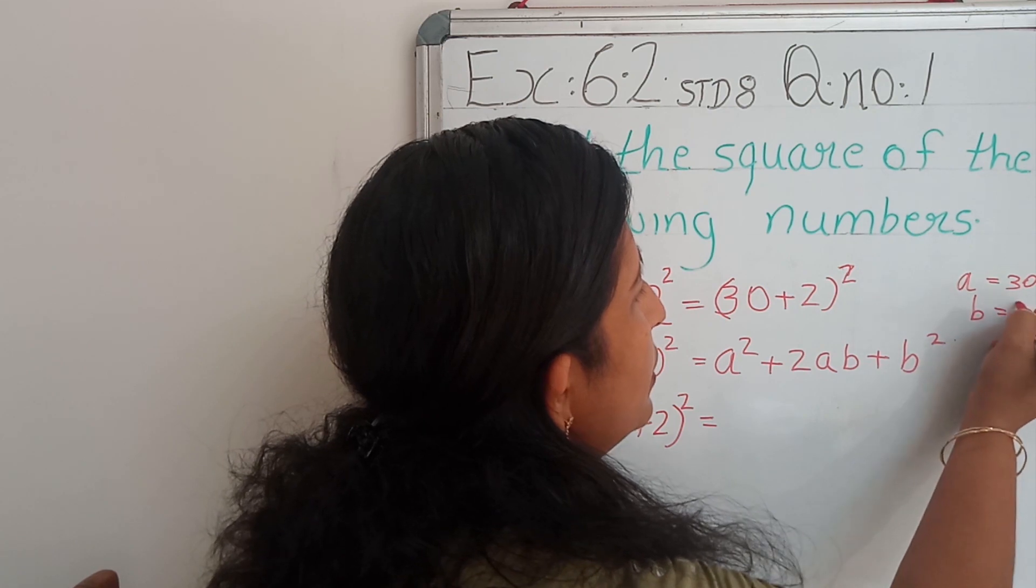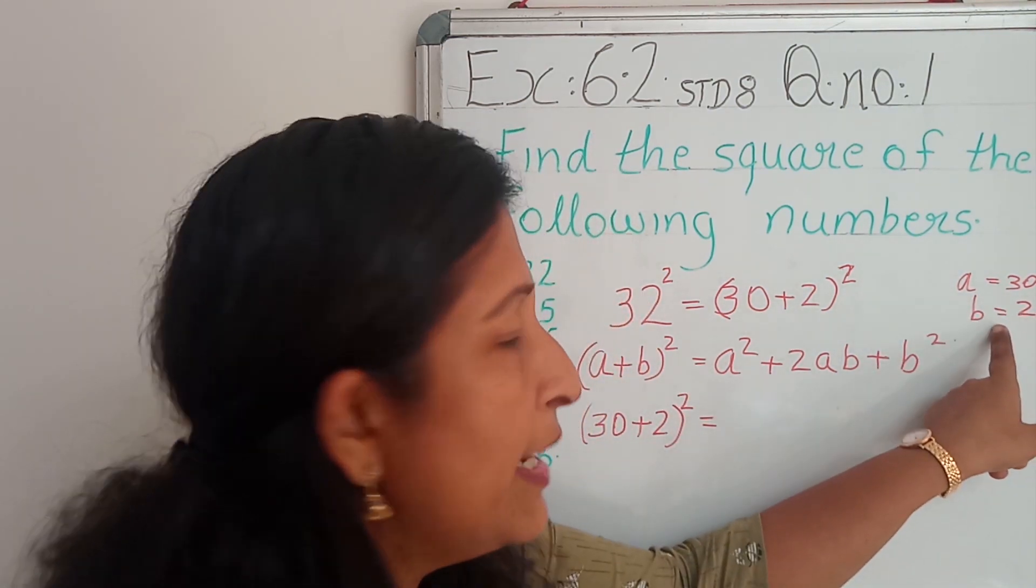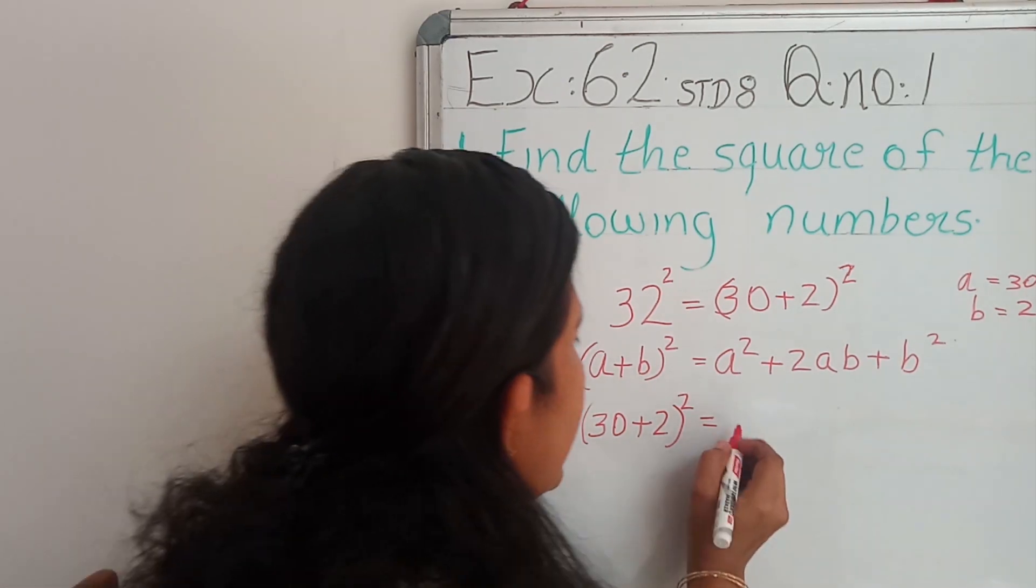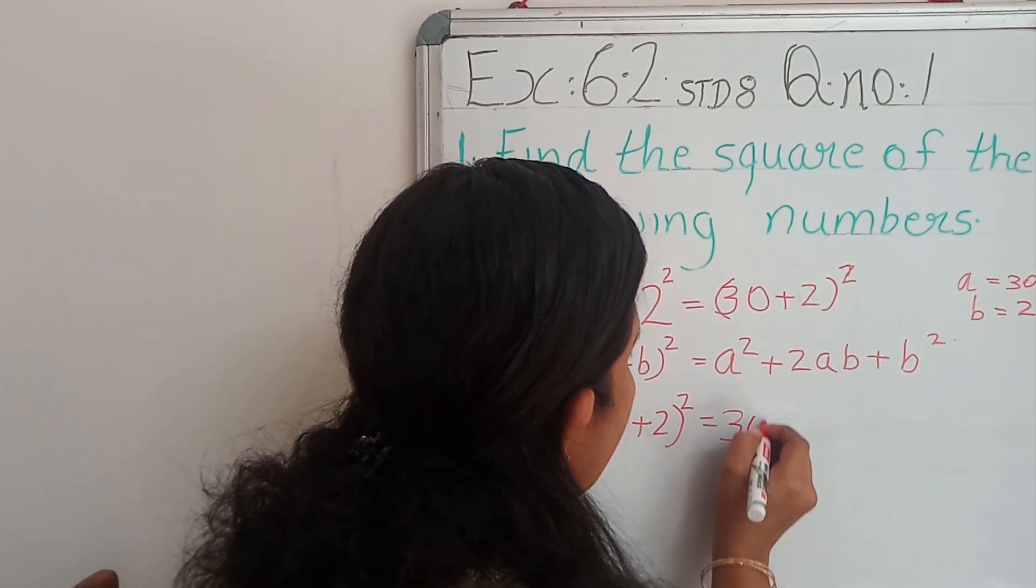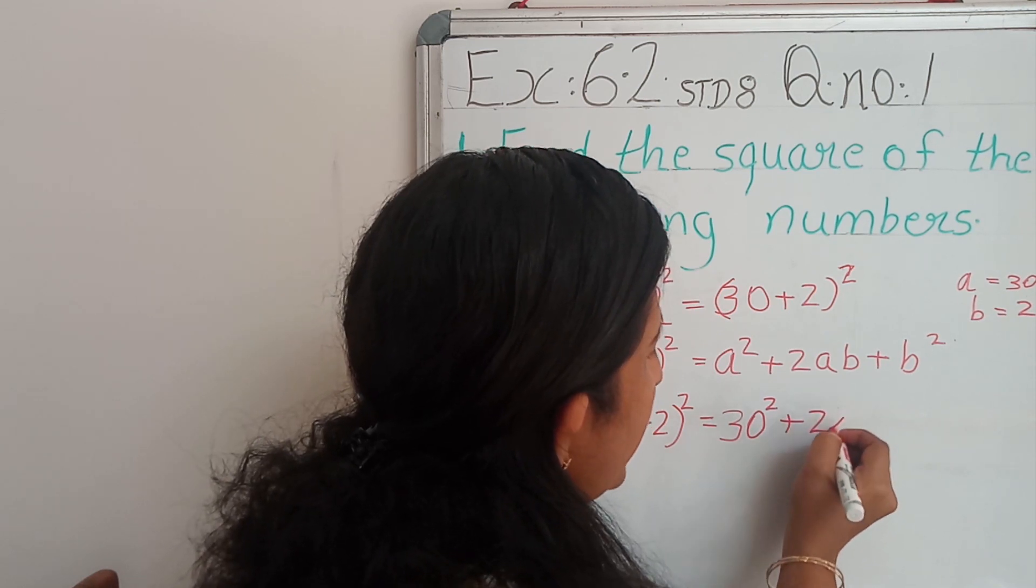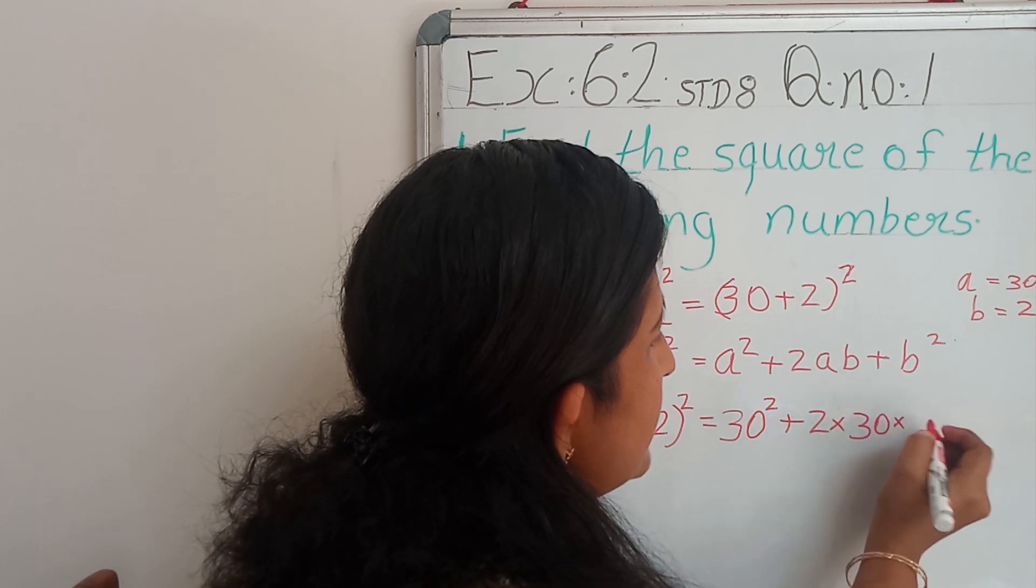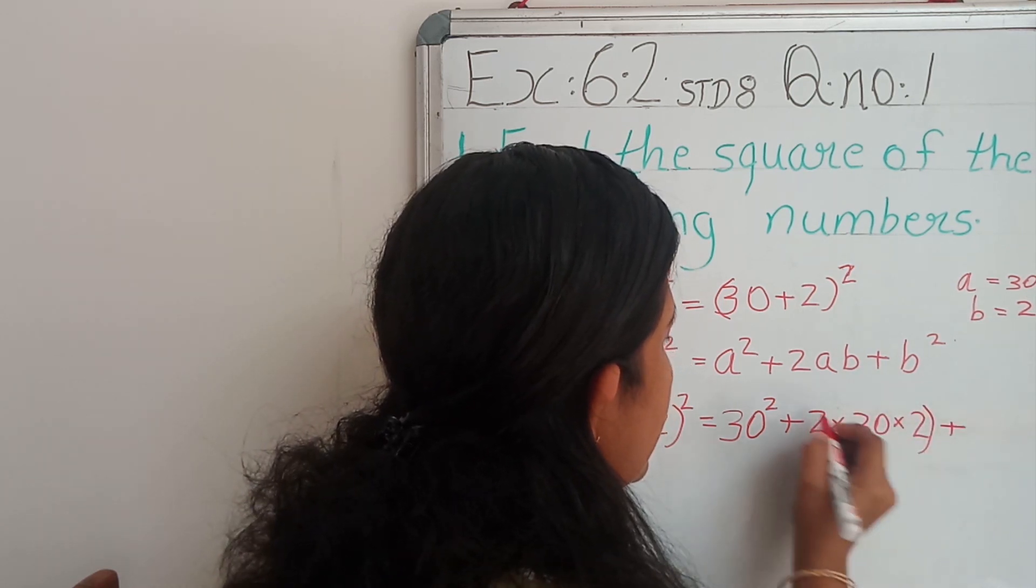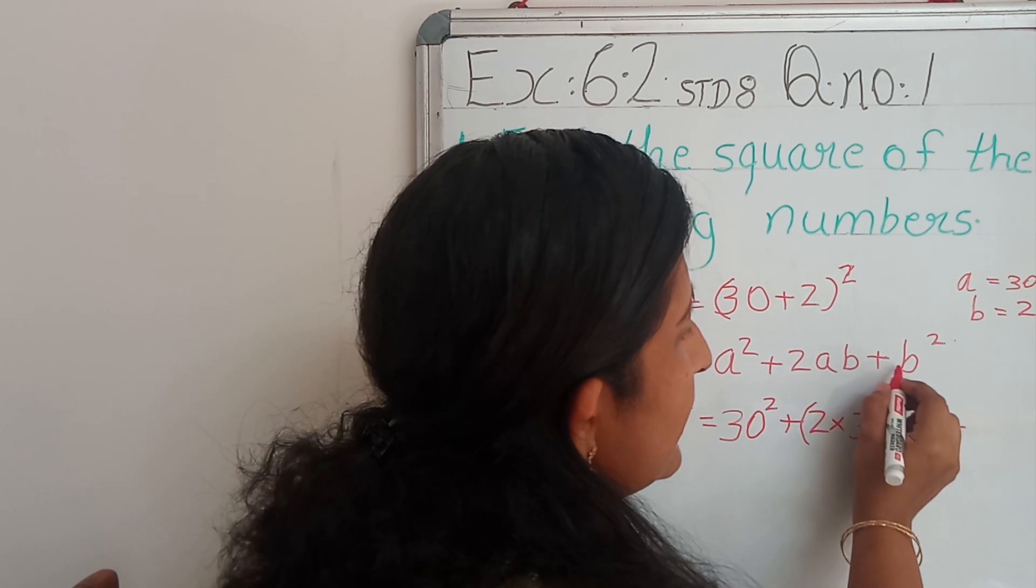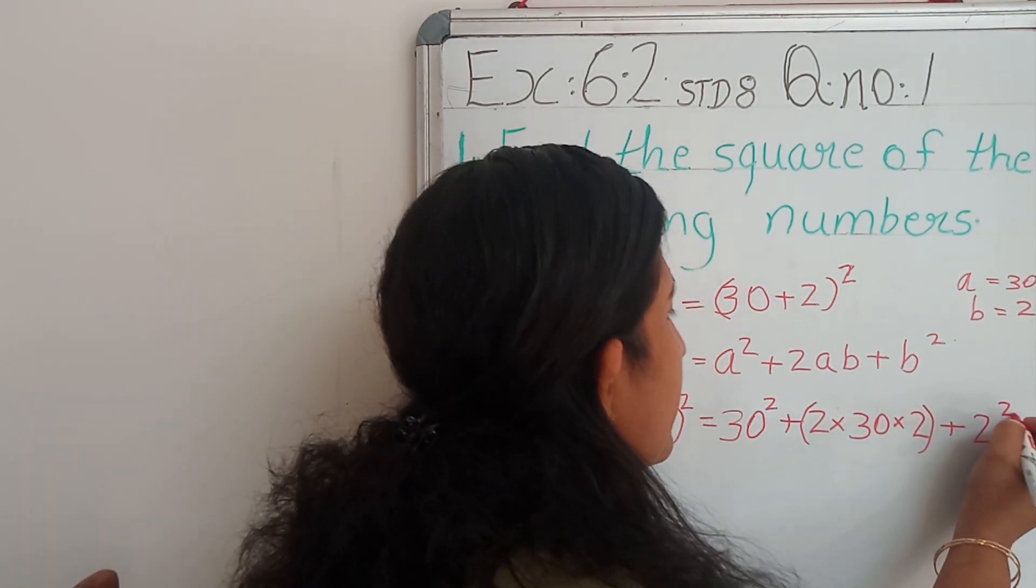So, substitute the value of A and B in this: 30 square plus 2 into A is 30 and B is 2 plus, this is a single term, then B square. B is 2. So, 2 the whole square.